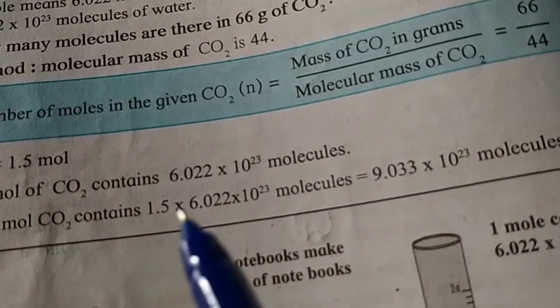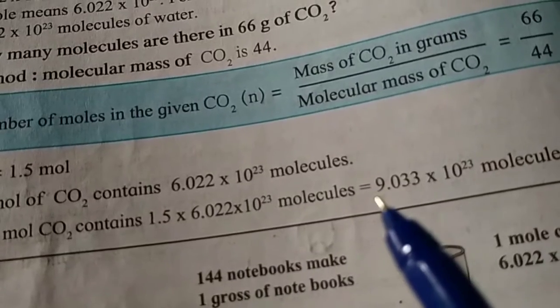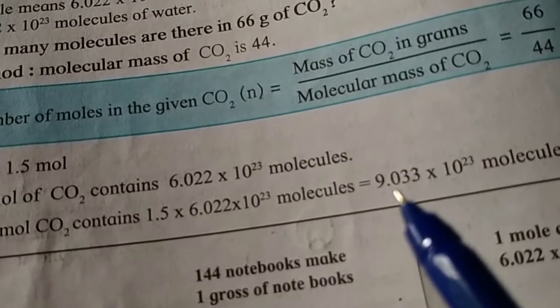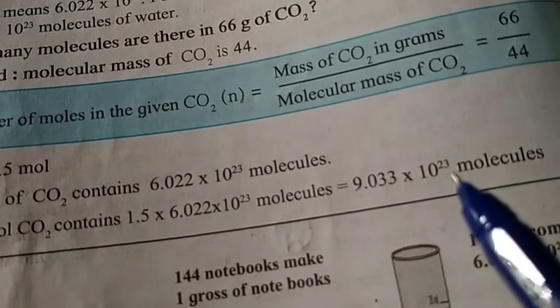That is 1.5 × 6.022 equals 9.033, and this 10^23 we will keep as it is. So, 9.033 × 10^23 molecules.